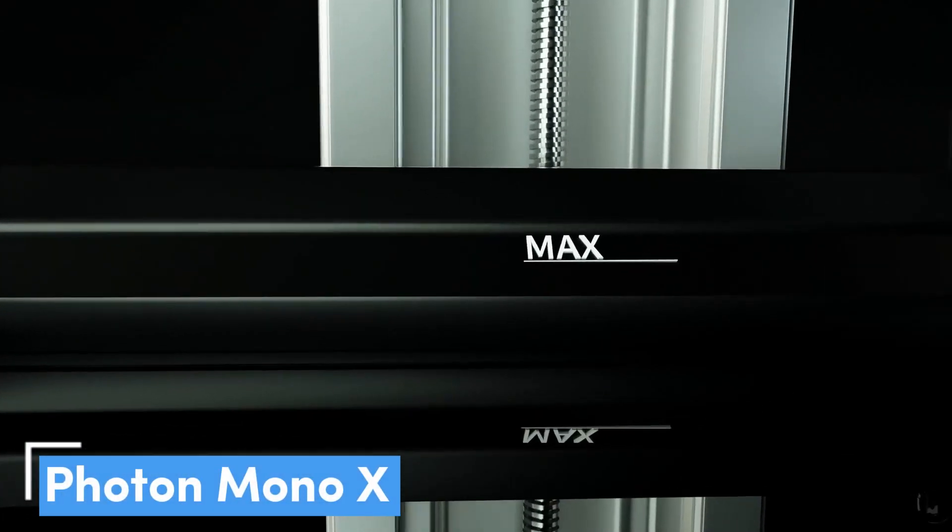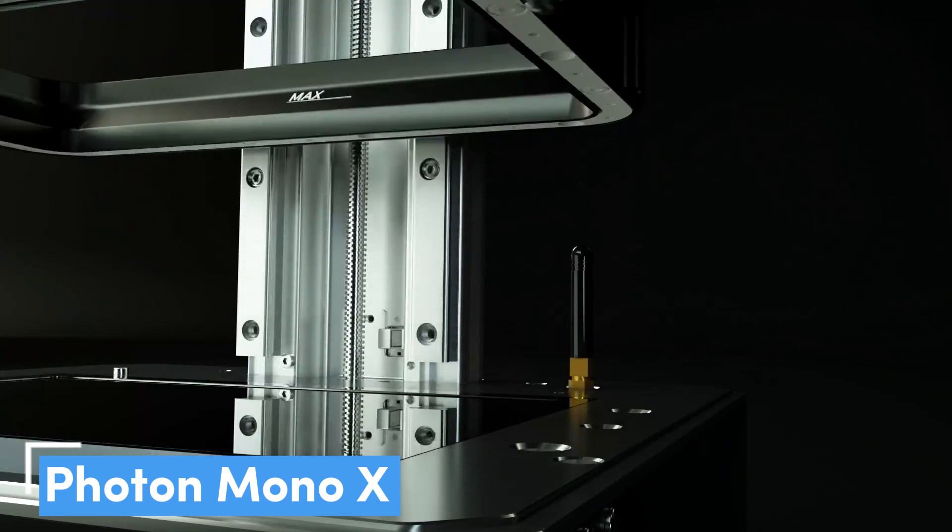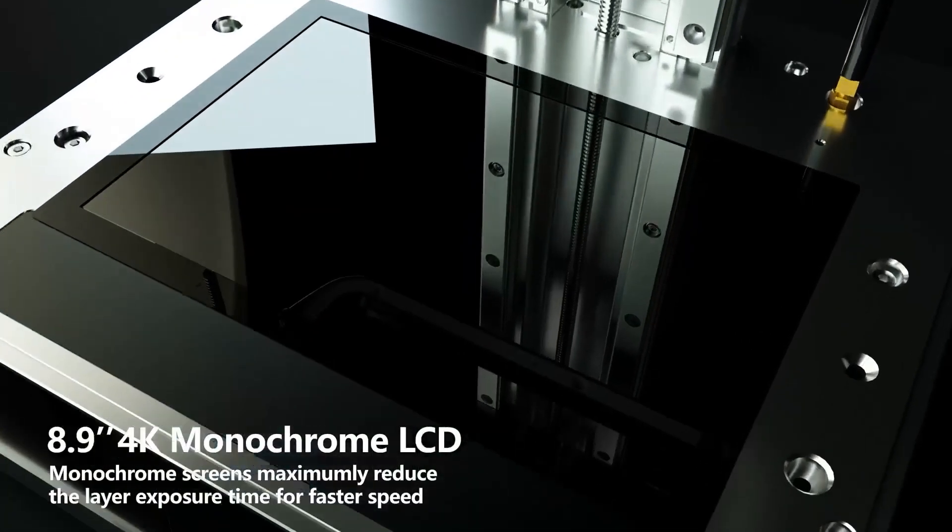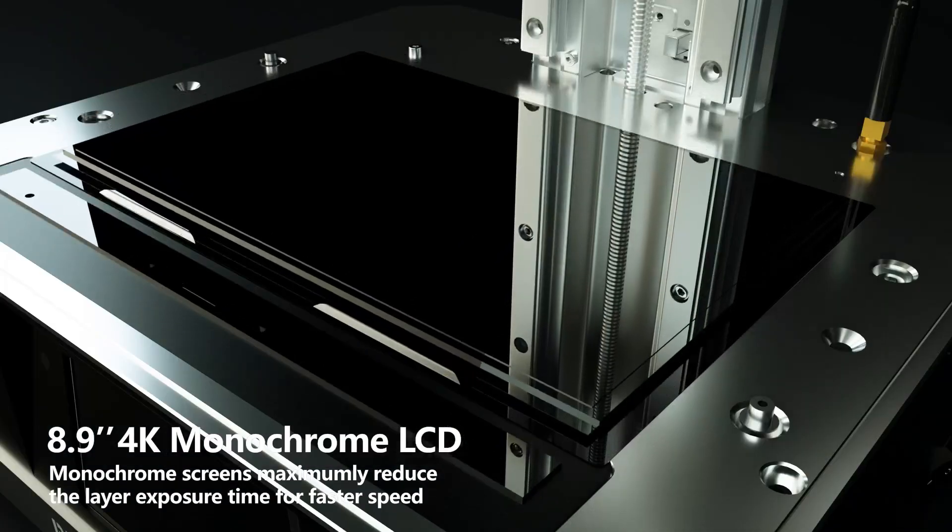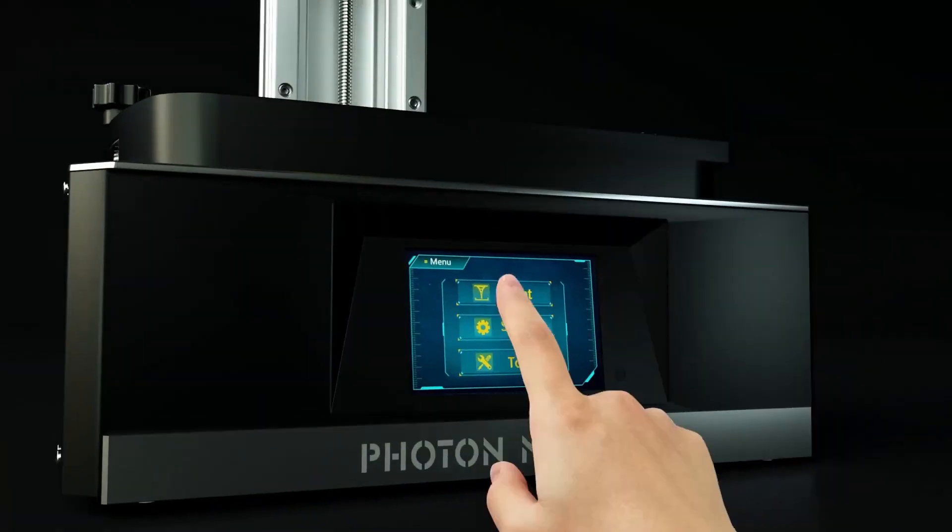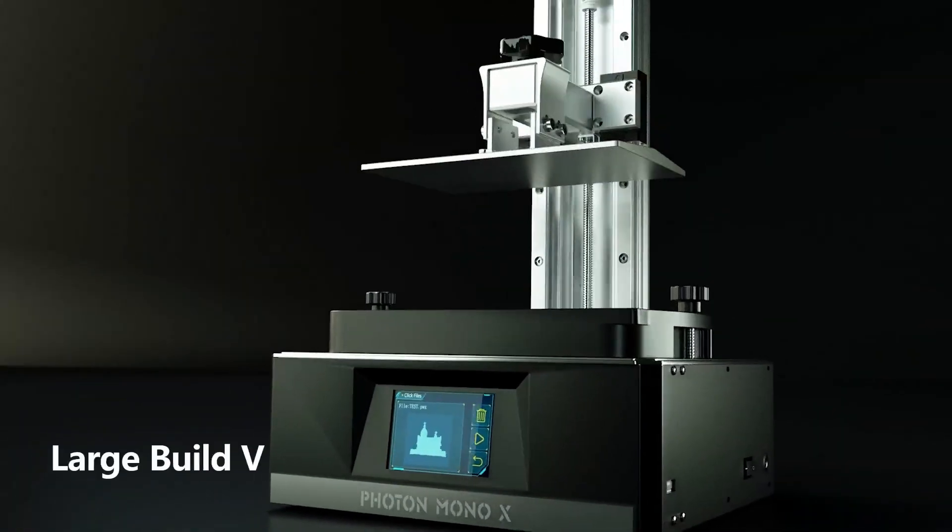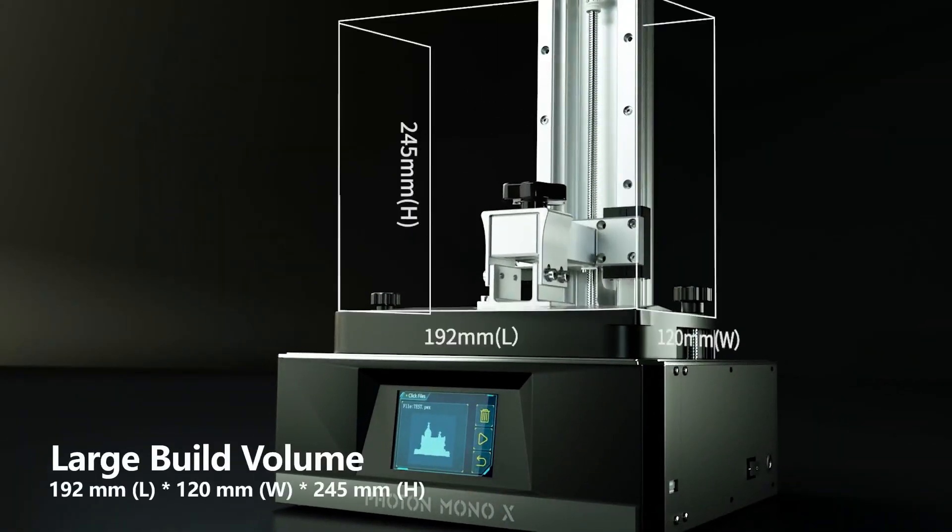Number 4, Photon Mono X, the best 3D printer for low-cost SLA printing. As good as the Form 3 is, it's very expensive. Printers like the now-sold-out Peoplely Phenom brought down the price of SLA printing somewhat, but the Photon Mono X offers an even cheaper entry.